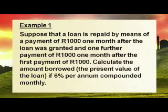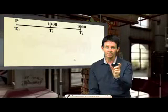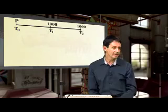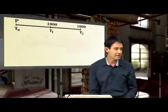Let's have a look at this example quickly. Suppose that a loan is repaid by means of payments of a thousand Rand one month after a loan was granted and one further payment of a thousand Rand one month after the first payment. Calculate the amount borrowed, the present value of the loan, if 6% per annum compounded monthly is the interest rate. You borrow money, a month later you pay a thousand Rand, and a month later you pay another thousand Rand.